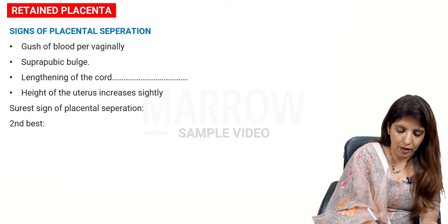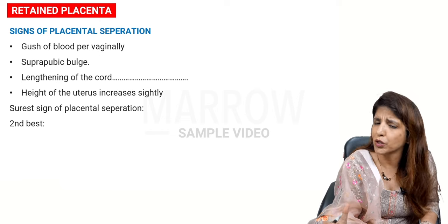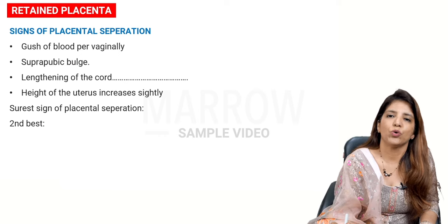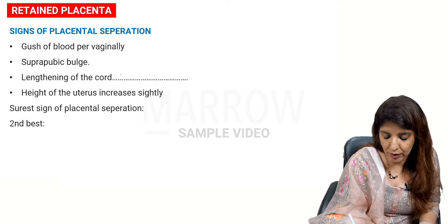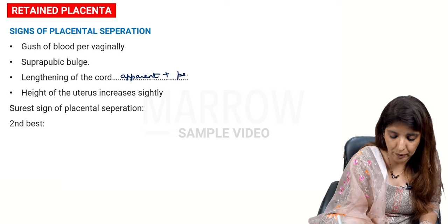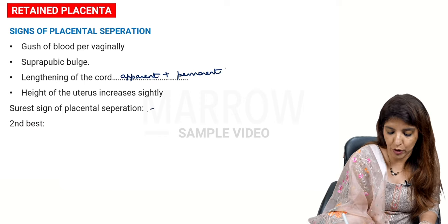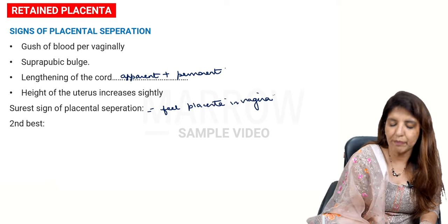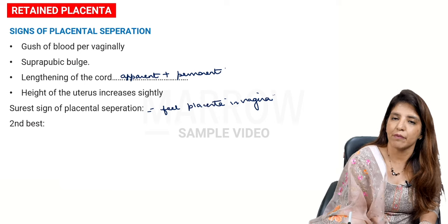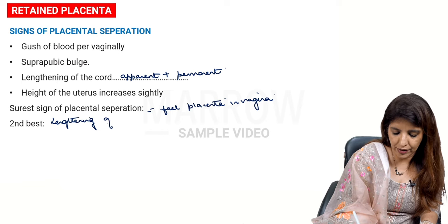Coming to retained placenta — first, quickly revise the signs of placental separation: a gush of blood per vaginally, suprapubic bulge, apparent and permanent lengthening of the cord, and a slight increase in uterine height. The surest sign of placental separation is feeling the placenta in the vagina. The second best sign is apparent and permanent lengthening of the cord.